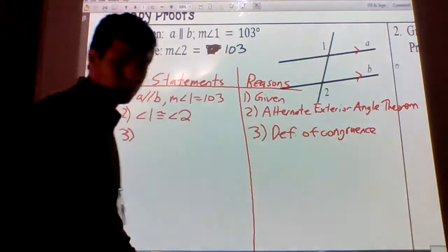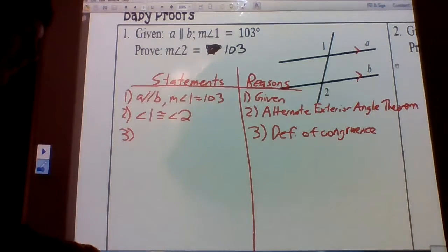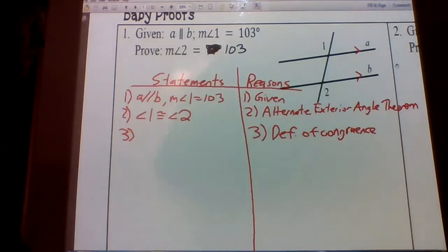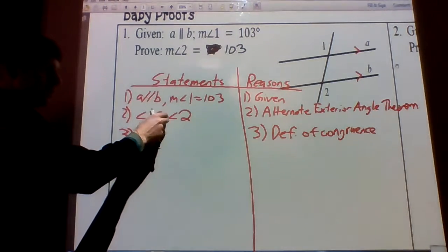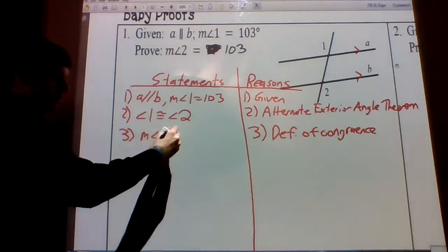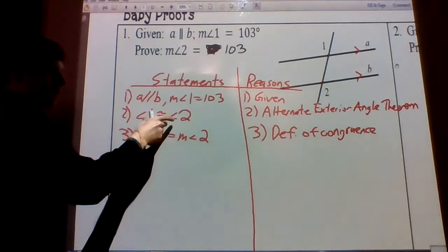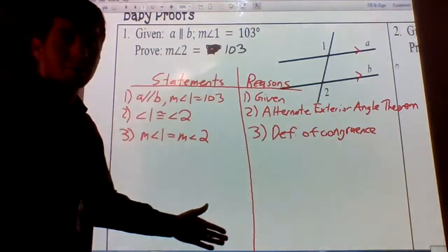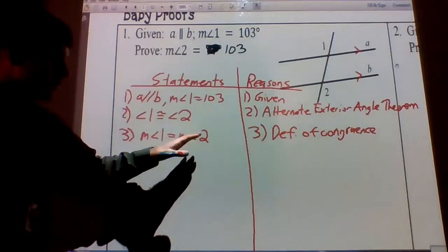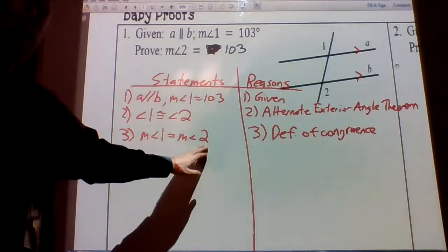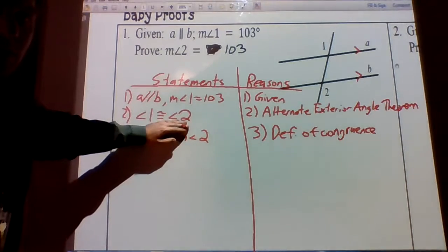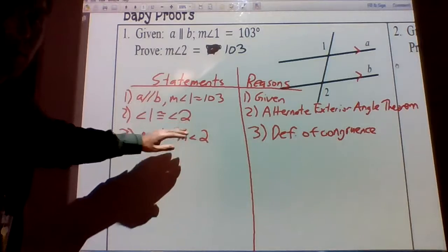Our third step is to use what we know about congruence — the definition of congruence. Reading it from the reference sheet: it says having the exact same size and shape and thereby having the exact same measure. So the definition of congruence tells us their measures are equal. Since angle one and angle two are congruent, their measures are equal. The measure of angle one equals the measure of angle two. The names of the angles are congruent; the values are equal.